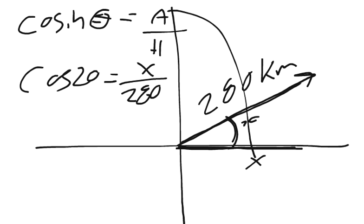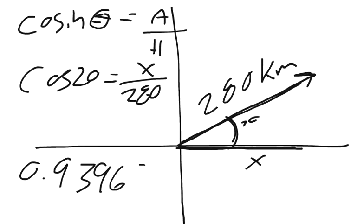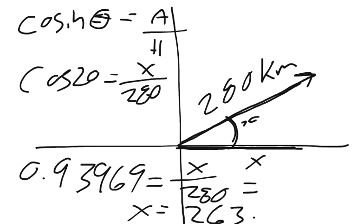My adjacent is the x. And when you type in 20 in your calculator and hit cosine, the answer is 0.93969. So I know that equals x over 280. You can work that out algebraically to find that x equals 263.11. So far, I have my x1 value is 263.11.